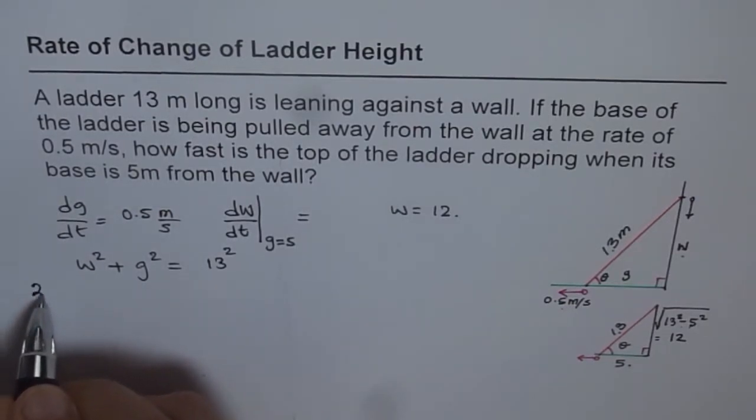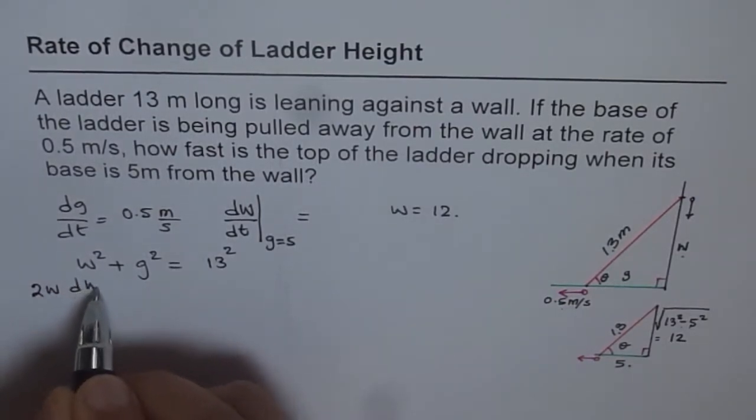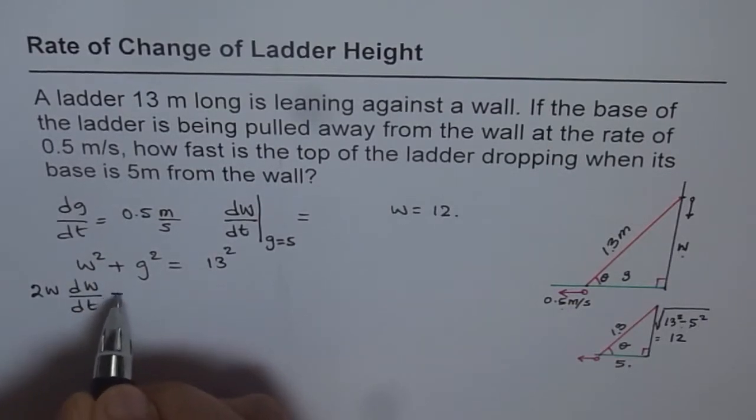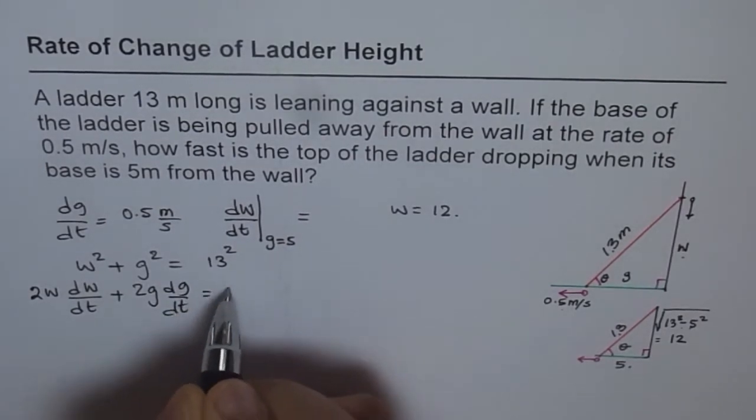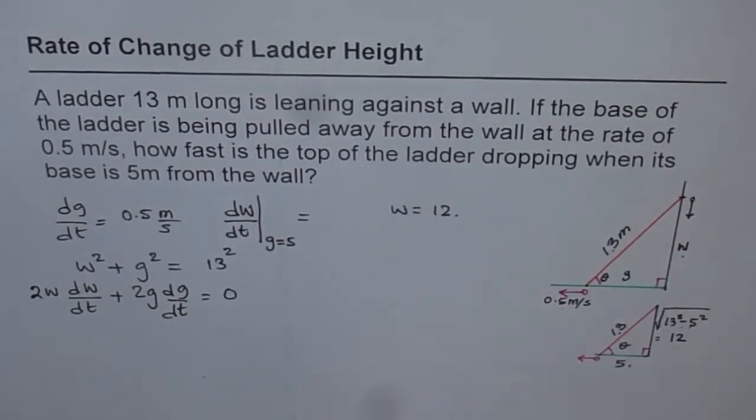I get 2W dW/dt plus 2G dG/dt equals 0, since the length of the ladder is not changing with time.